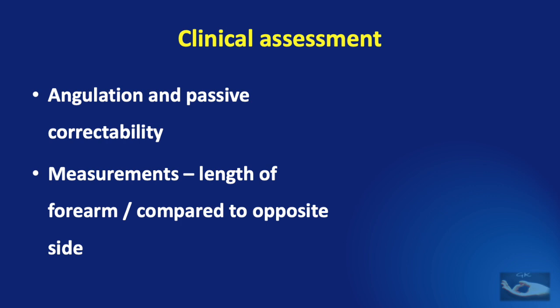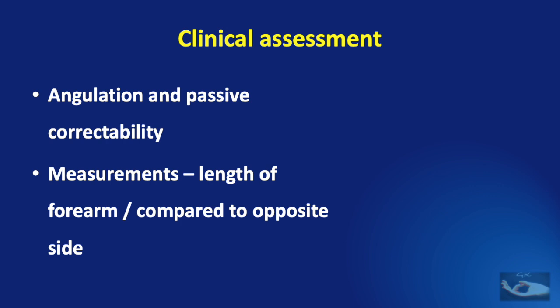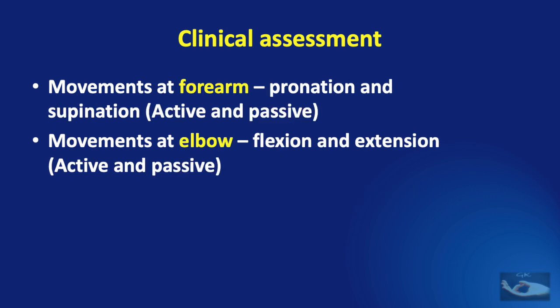During clinical assessment, we need to note which hands are affected, the appearance of the hand and anomalies, the appearance of the thumb and associated anomalies, and measure the angulation and passive correctability of the hand deviation. Tightness of tissues on the radial side at the wrist level can usually be palpated. The forearm length must be measured and compared to the opposite side in unilateral cases. Active and passive movements of the fingers (flexion and extension), thumb opposition, wrist flexion and extension, forearm pronation and supination, and elbow flexion and extension must all be measured.